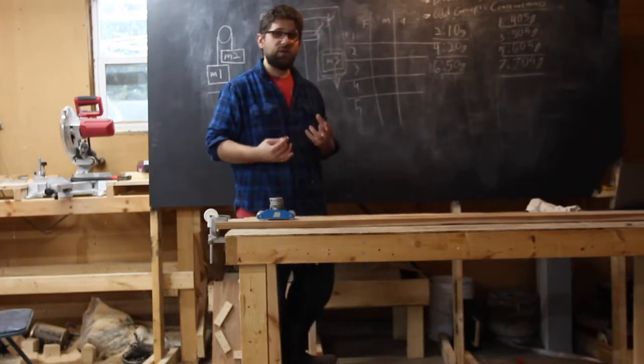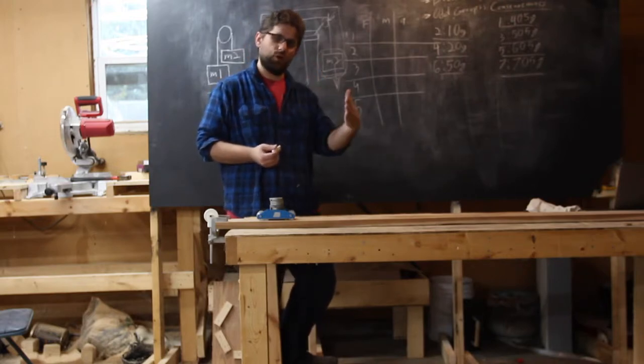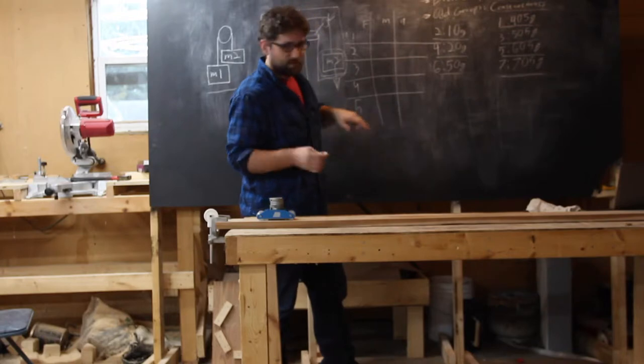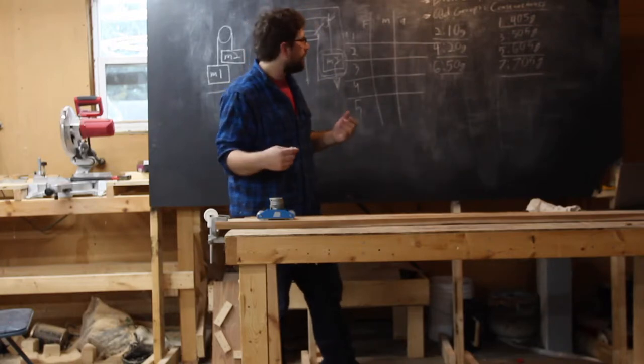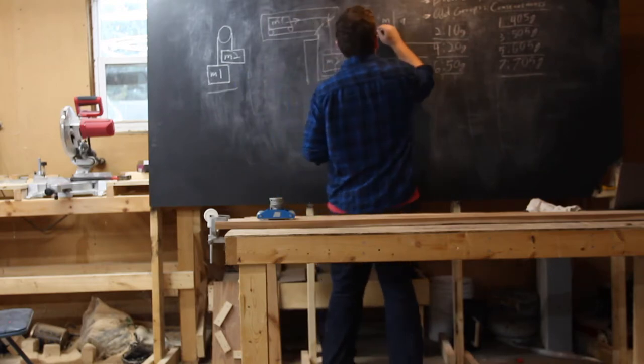And remember, when we're working with F equals MA, we're working in kilograms. So, I'm going to have to go ahead and convert that over. So, all of my masses, since in this trial I'm doing a constant mass, are going to be 0.85 kilograms. So, I'm going to go ahead and write that in.